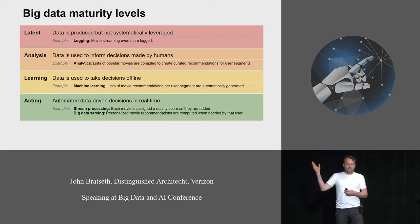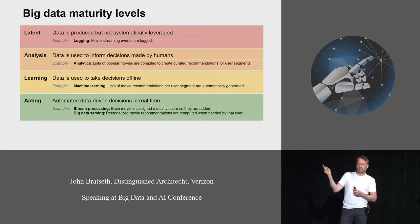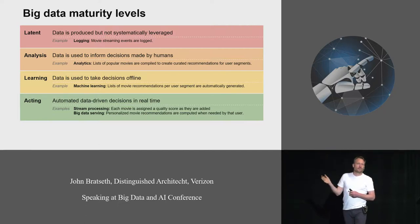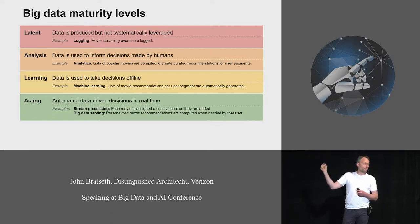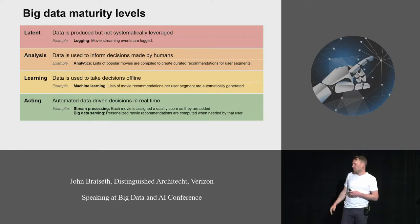The other case, which is the subject of this talk, is what we call big data serving, where you need to evaluate your model over many data items for every single request to your system. An example is movie recommendation, where you evaluate your recommendation model over all your movies for every request the user makes to see a list of movies.